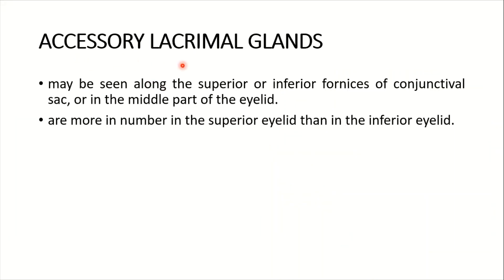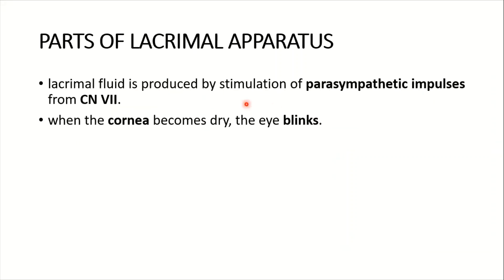Many accessory lacrimal glands are seen along the superior or inferior fornices of the conjunctival sac or in the middle part of the eyelid. They are more numerous in the superior eyelid than in the inferior. Lacrimal fluid is produced by stimulation of parasympathetic impulses from cranial nerve 7, the facial nerve. When the cornea becomes dry, the eye blinks.